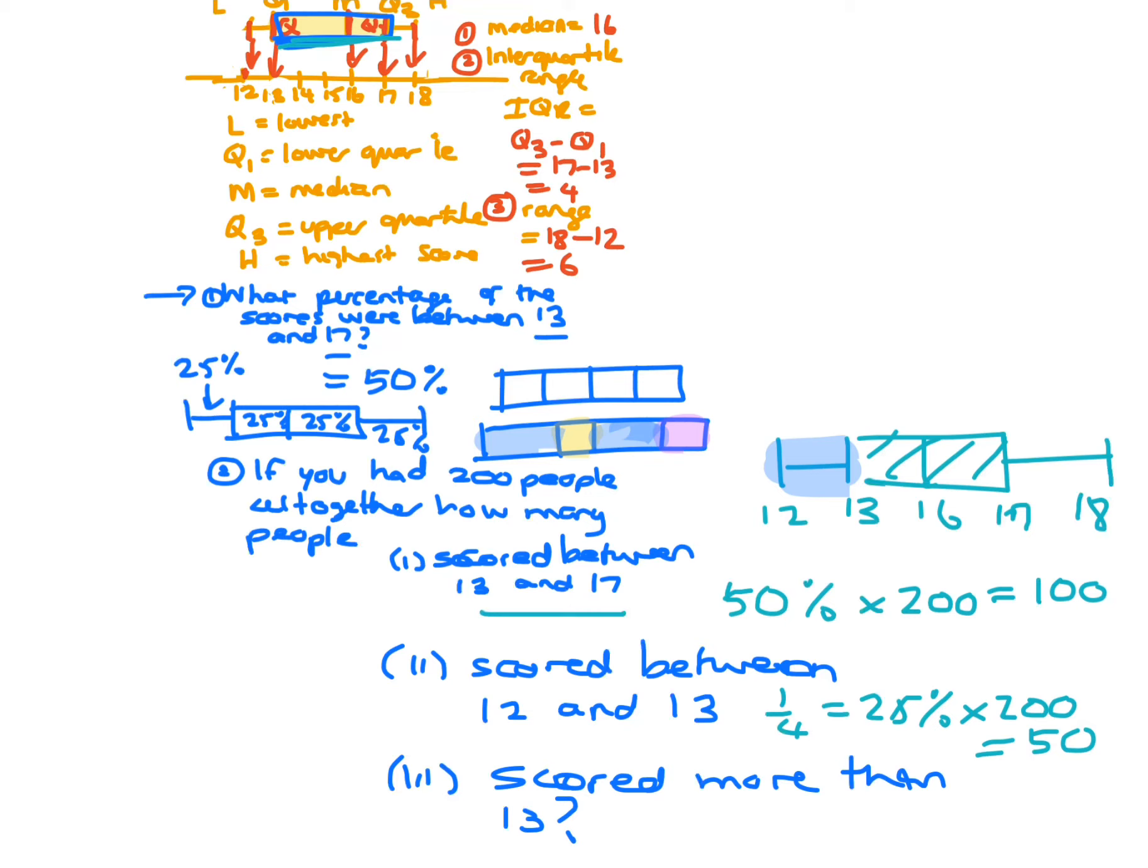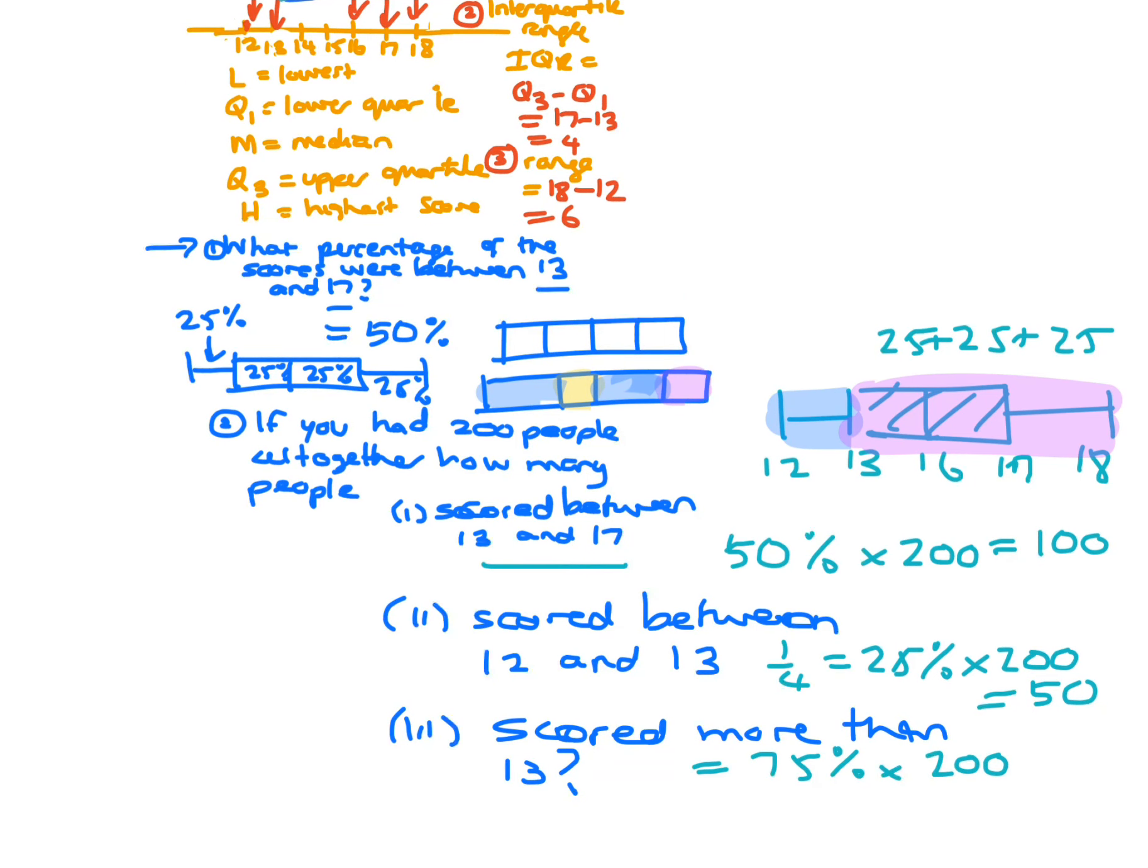And the last one, if you scored more than 13, so that's here. So that's three quarters, or 25 plus 25 plus 25. So that's actually 75%. So if you did 75% of 200, you end up with 150 people.